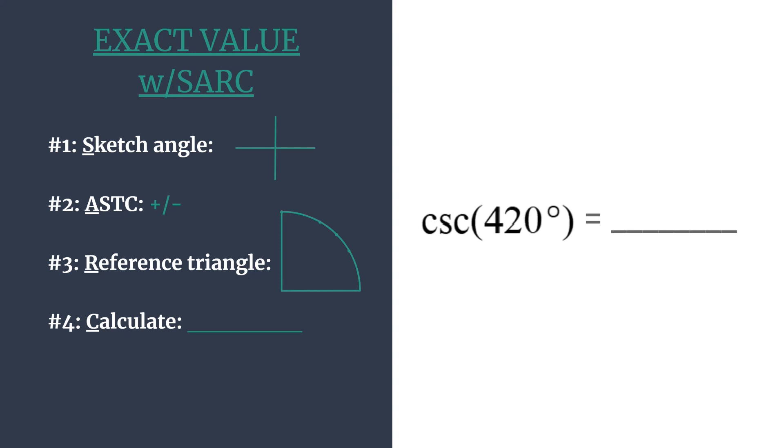So we'll do that for cosecant of 420 degrees. So first S, let's sketch the angle's terminal side. We notice our angle is 420 degrees, so we're rotating counterclockwise since it's positive, and we also should notice that this is more than one counterclockwise rotation, and so it'll be helpful to find a coterminal angle.